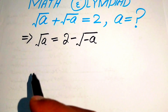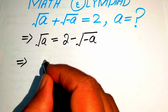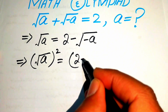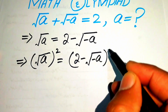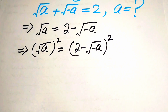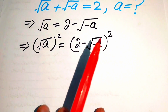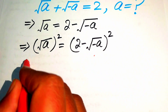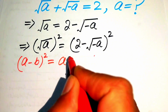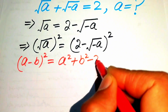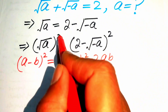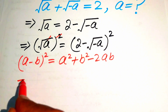In the next step we take the square on both sides and obtain: (√a)² equals (2 minus √(−a))². We simplify using the square identity (a − b)² = a² + b² − 2ab. On the left hand side, the square and square root cancel each other.